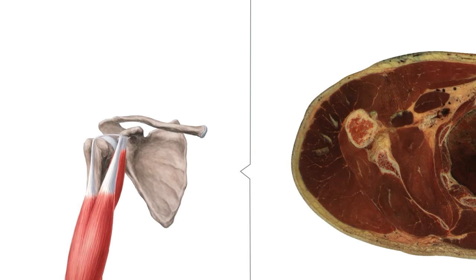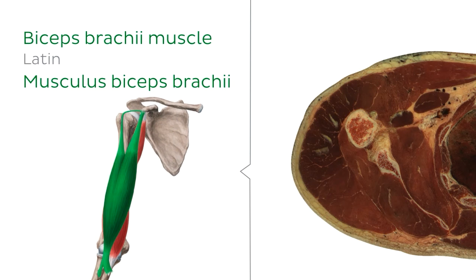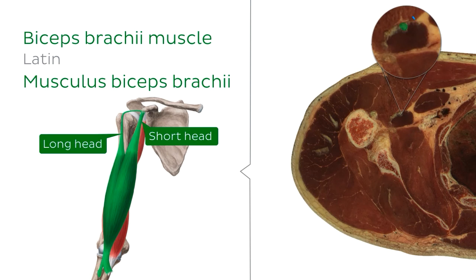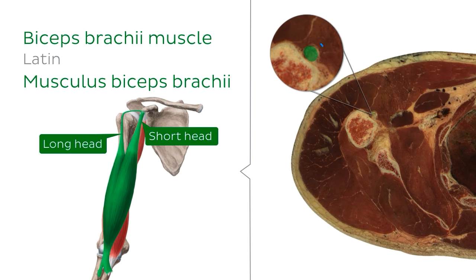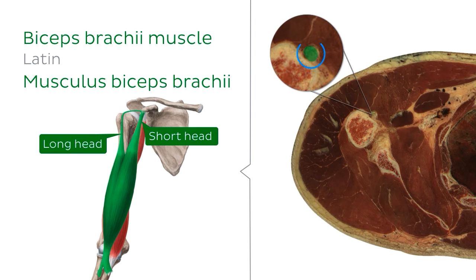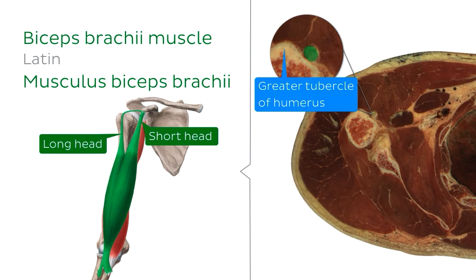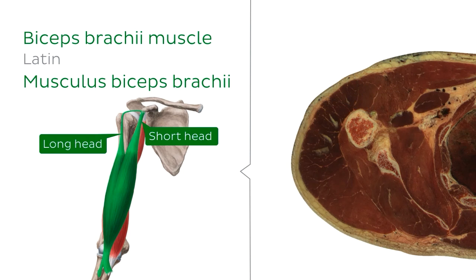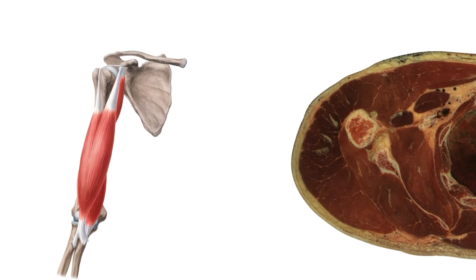The biceps brachii muscle has two tendons or heads. And in this cross section, we can identify both of these tendons. Over here we have the tendon of the short head, superficial to the coracobrachialis muscle, with the tendon of the long head located here, between the greater and lesser tubercles of the humerus.